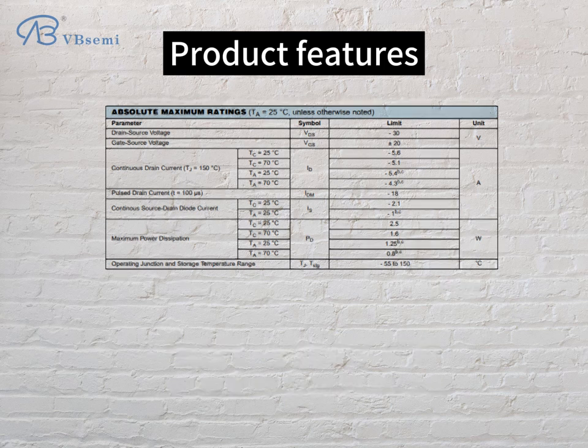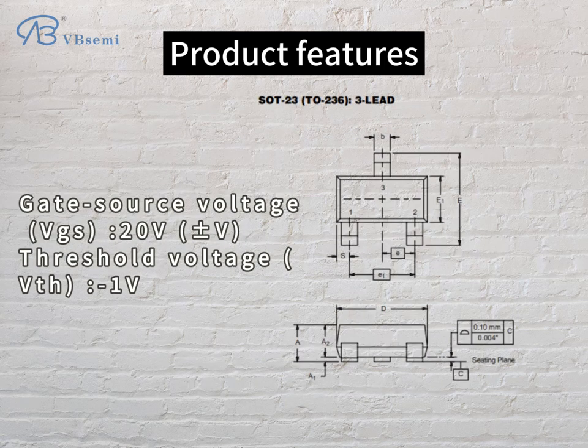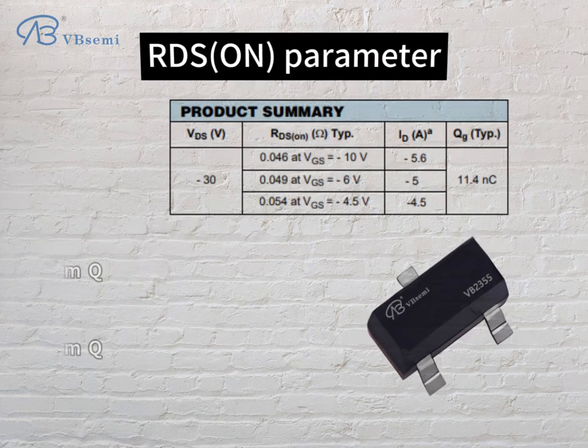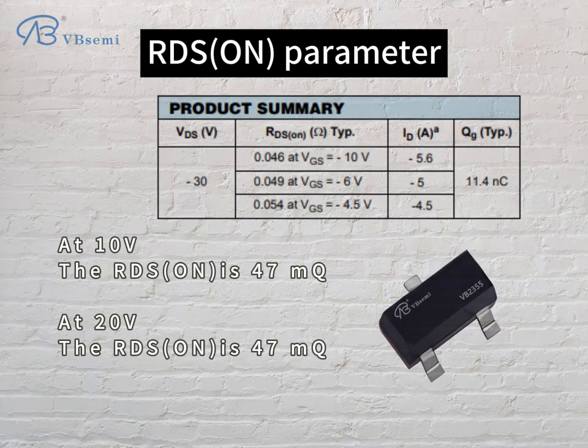Gate-source voltage VGS: ±20V. Threshold voltage VTH: -1V. RDS(on) parameter: at 10V, the RDS(on) is 47mΩ; at 20V, the RDS(on) is 47mΩ.